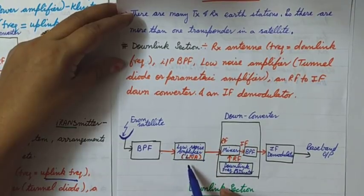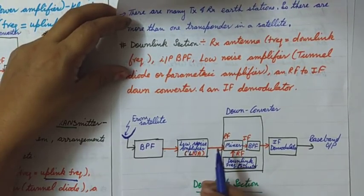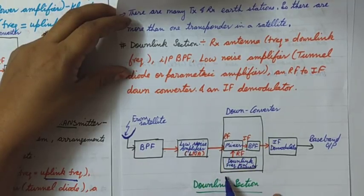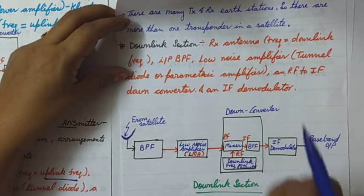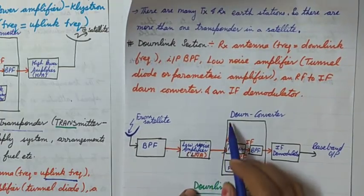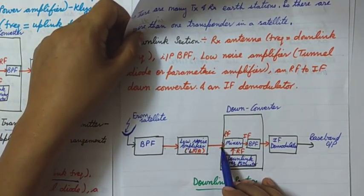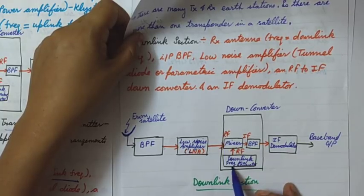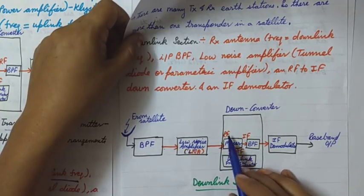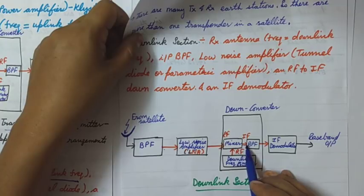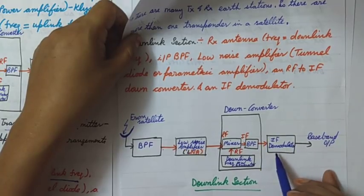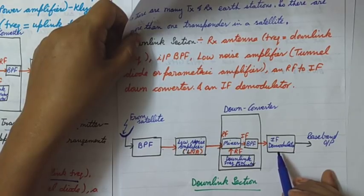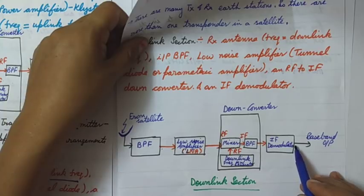Then there is a low noise amplifier to amplify the signal with very low noise, followed by a down converter. The down converter takes the RF frequency sent by the satellite and mixes it with the output of a downlink frequency microwave generator. These two signals produce an intermediate frequency — the same as in the uplink section — since it is not the final frequency. This IF is sent through a bandpass filter, and its output is given to the IF demodulator, which acts as the reverse of the IF modulator.